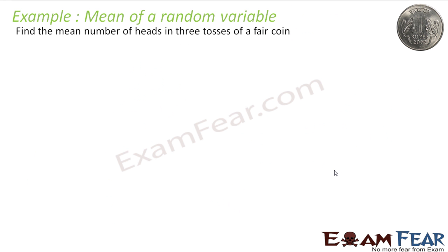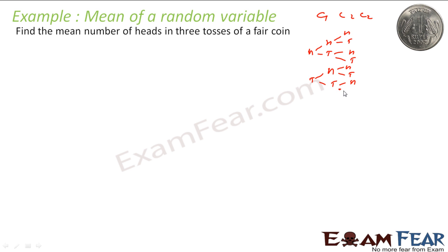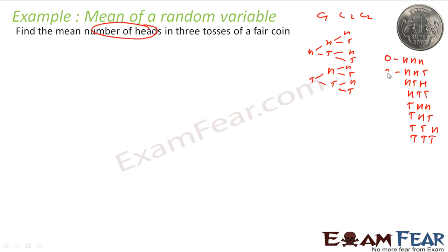Let's take a simpler example. Find the mean number of heads in 3 tosses of a coin. I have one coin and toss it three times. The distribution gives outcomes like HHH, HHT, HTH, HTT, THH, THT, TTH, TTT. I'm looking for the number of heads, so x can have values 0, 1, 2, or 3.